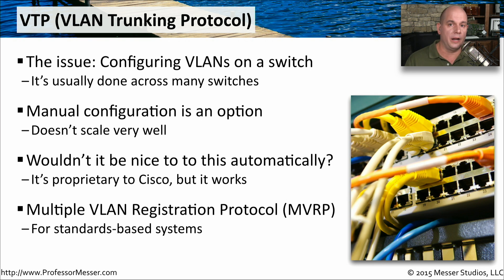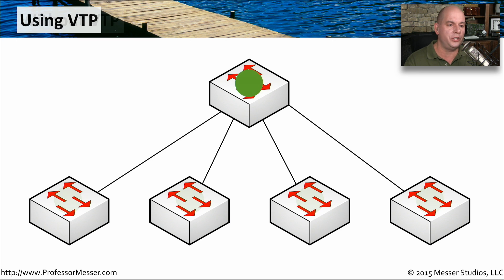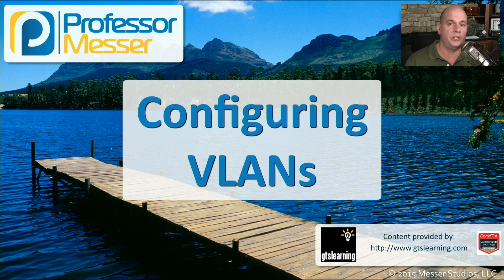There's also a more standards-based protocol that accomplishes this function called Multiple VLAN Registration Protocol, or MVRP. If you're non-Cisco, you may be using MVRP to accomplish effectively the same thing. If we aren't running VTP, we log into each switch individually — the first switch, then the second, then the third, fourth, and fifth — and hopefully we got everything right, because if we need to add something we'd have to repeat that process for every single switch. If we're using VTP, we configure everything on one central switch, which then passes all of those changes down to all of the other devices. That way, we can simply go to one place, make our change, and that change propagates itself to every other switch in our environment.